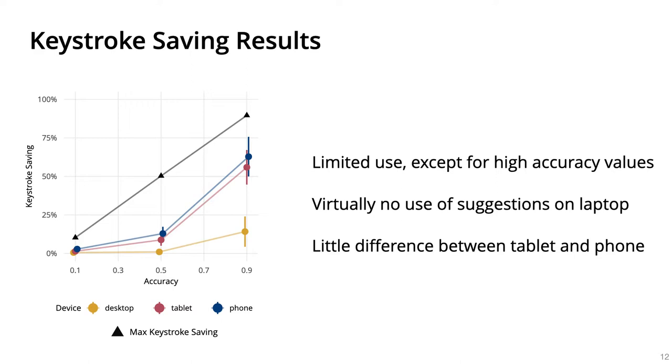To conclude, word suggestions must be uncannily accurate to improve entry speed. How beneficial they are depends on how fast users can type. If we want to improve entry speed, designing faster typing techniques appears more effective than improving the accuracy of word suggestions.